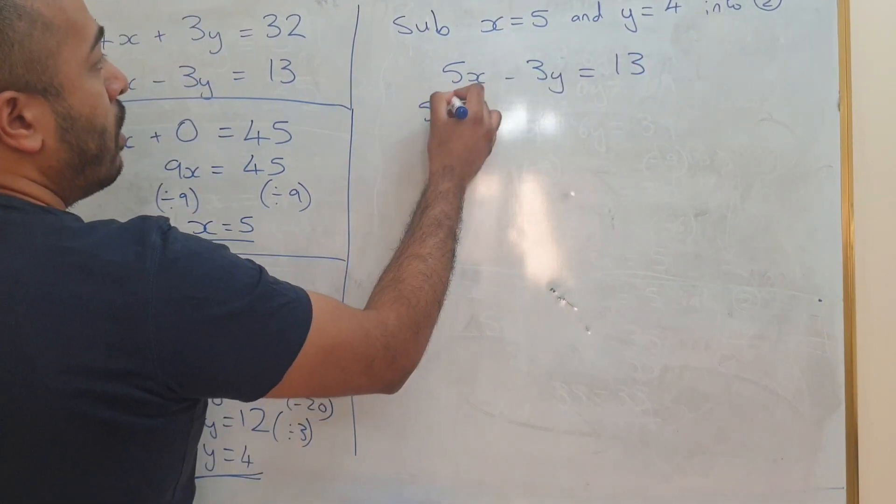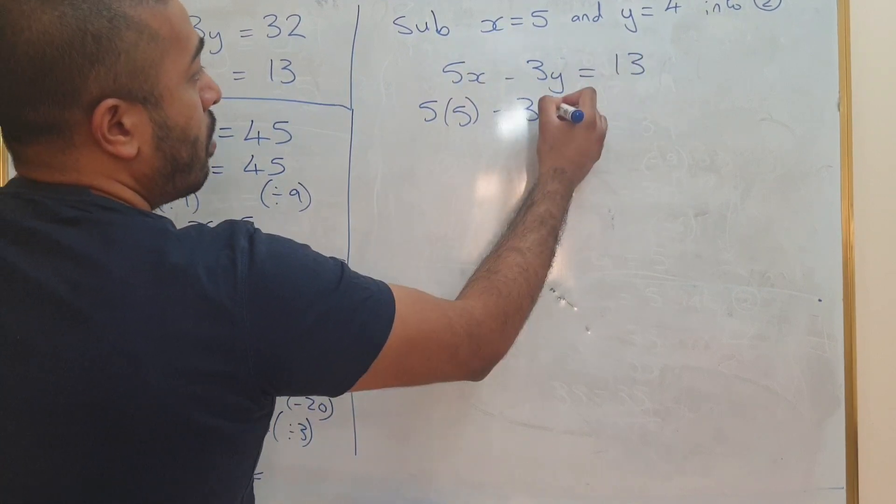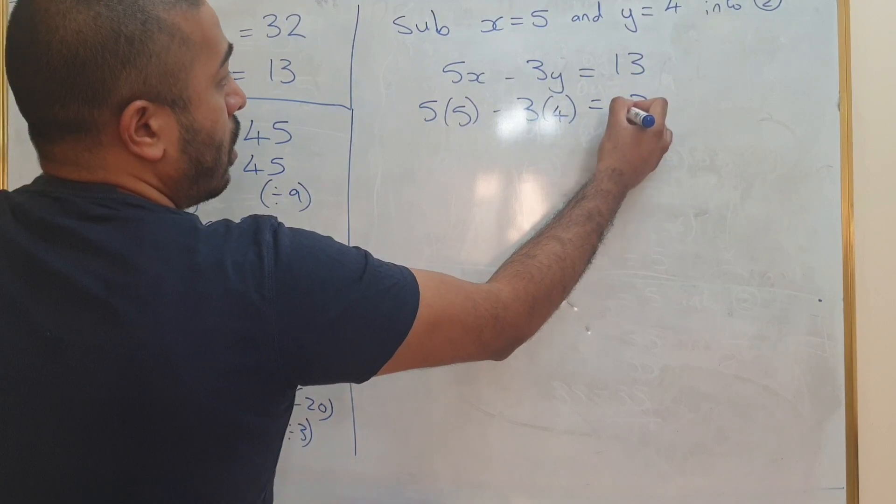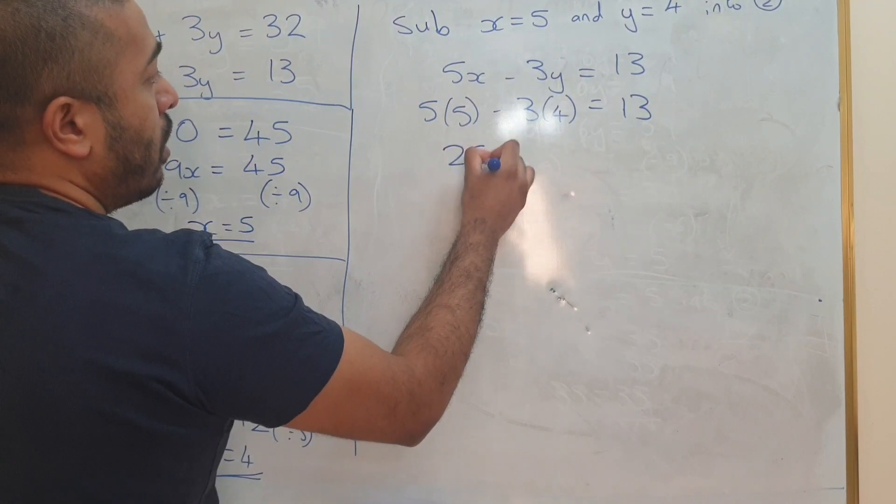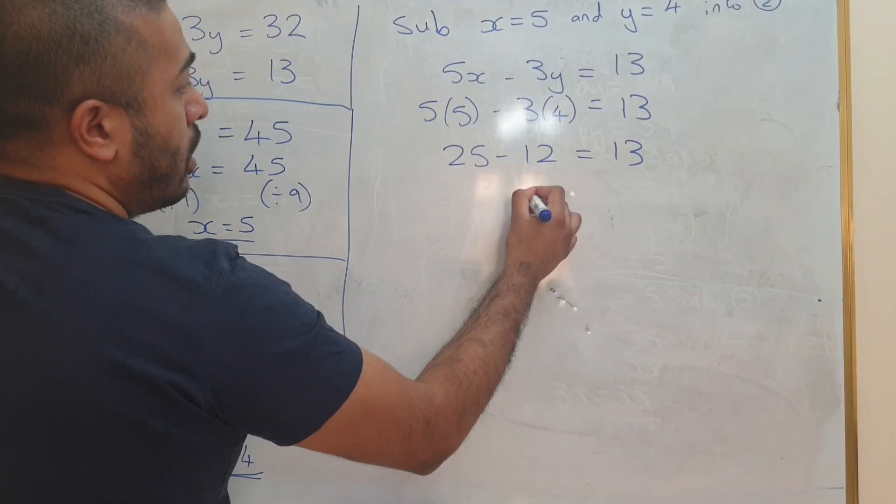Equation 2 is 5x minus 3y equals 13. So 5 times 5 minus 3 times by 4 should equal 13. That's 25 minus 12 equals 13. That answer is 13.